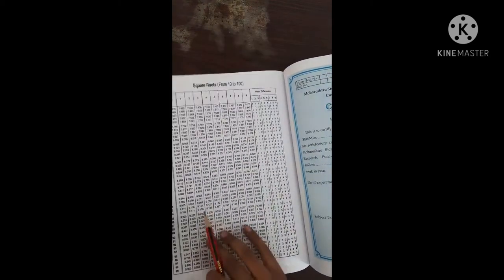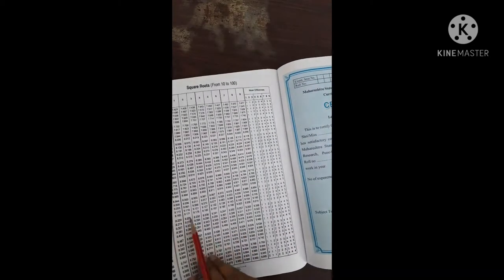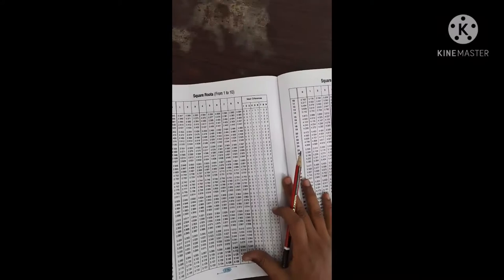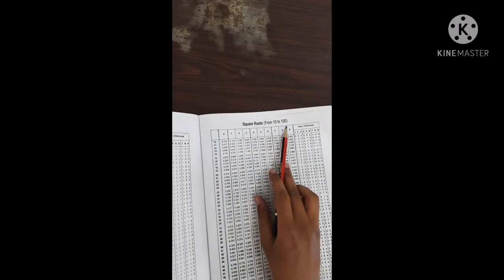How much is it? 17.5. So what is the reading for where it is 17.5? This is from 1 to 10 and this is from 10 to 100.